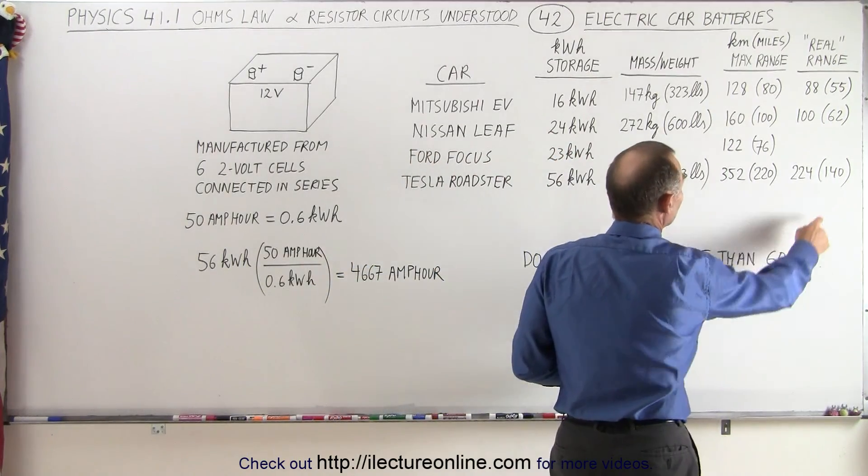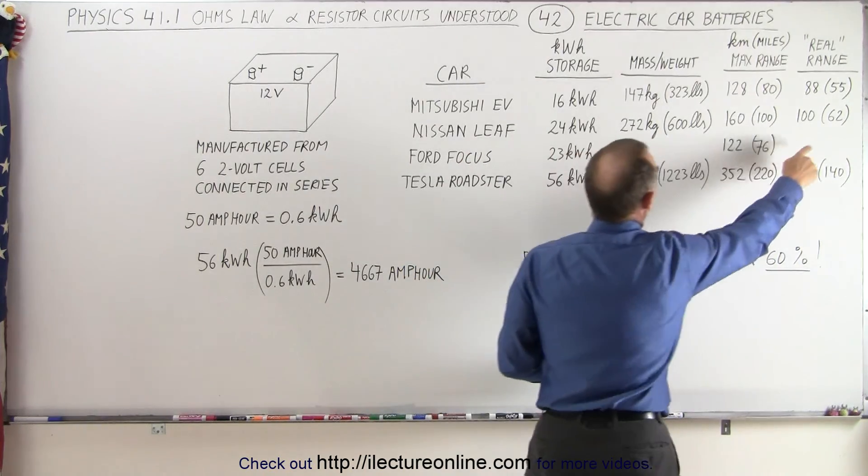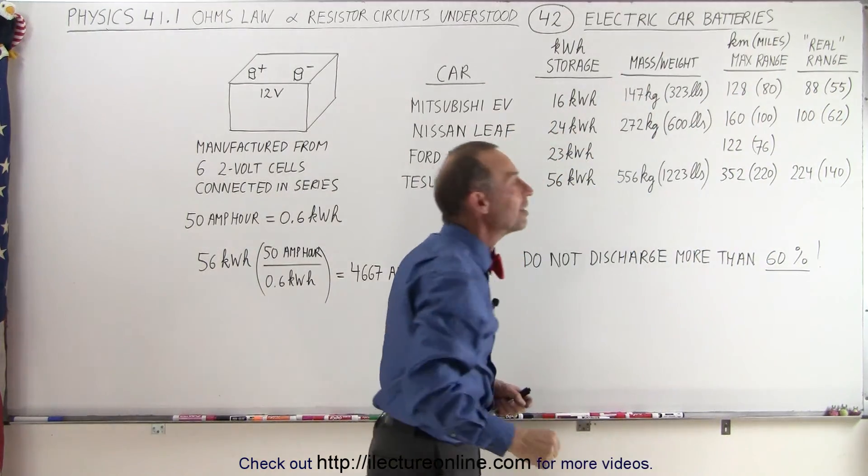So if you keep it at 60%, the range would be about 140 miles for the Tesla Roadster, about 62 miles for the Nissan Leaf, and about 55 miles for the Mitsubishi EV.